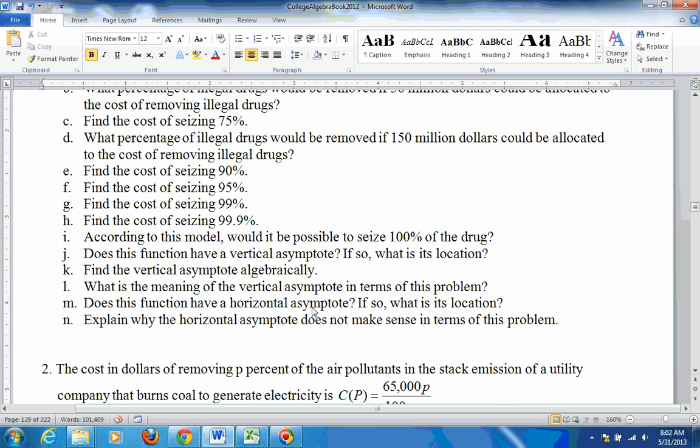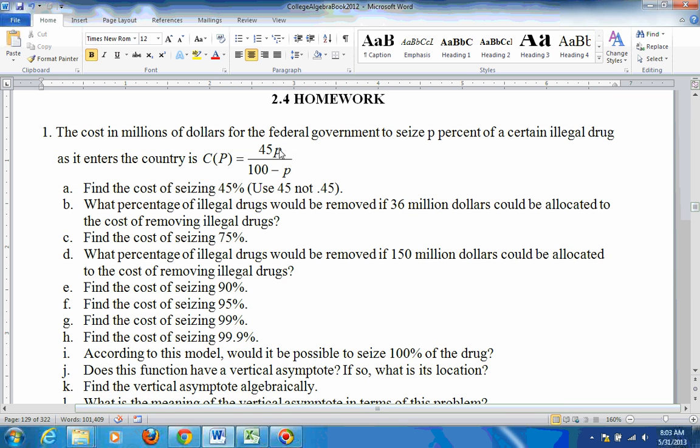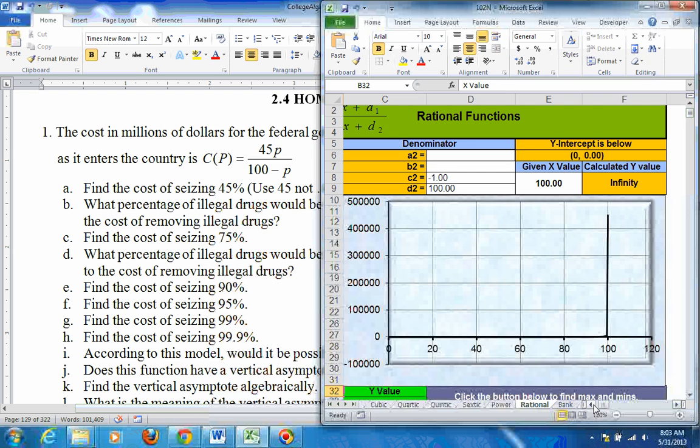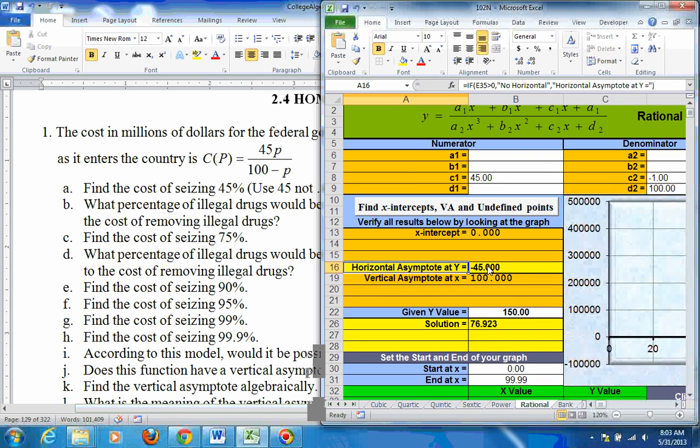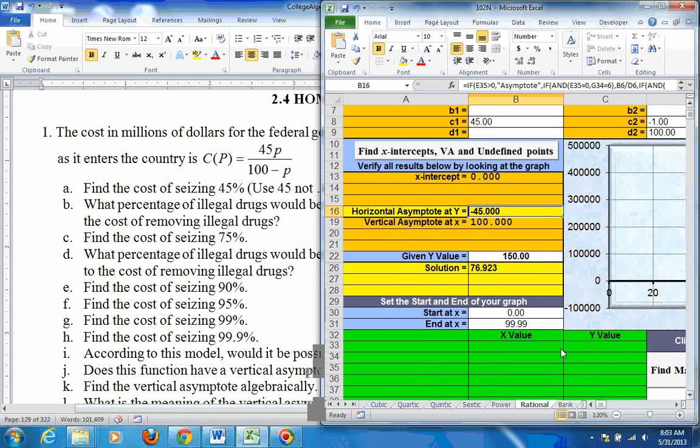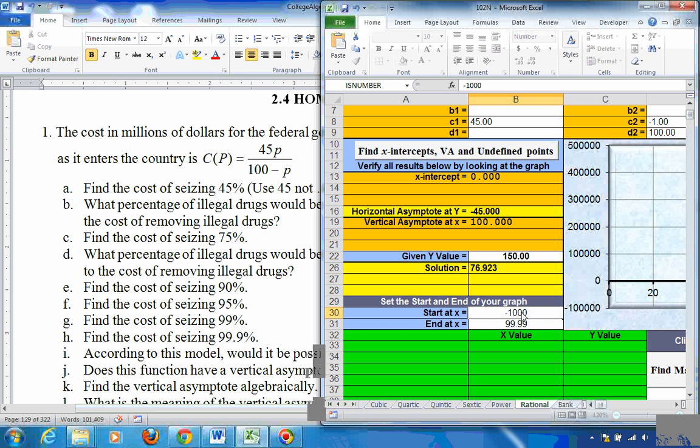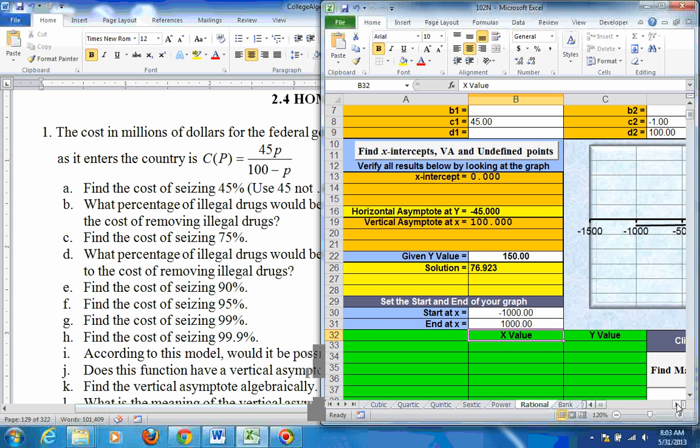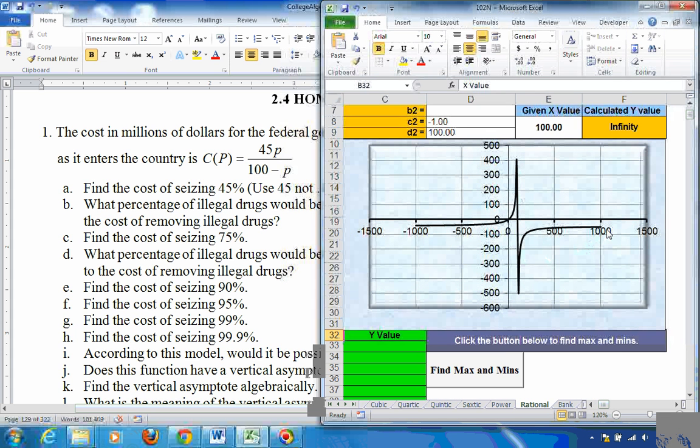And does this function have a horizontal asymptote, part m? Well, the horizontal asymptote is found algebraically by checking the powers of the numerator and denominator. The power of this numerator is 1, the power of the denominator is 1. And when the powers are the same, you take the leading coefficients and divide. 45 divided by negative 1 is negative 45. So there's a horizontal asymptote at negative 45. That's also found here automatically. If you look at this graph from like negative 1,000 to 1,000, this graph is going to level off at about negative 45. It may pass it here in the middle, but in the long run, it's leveling off right here at negative 45 at a height.